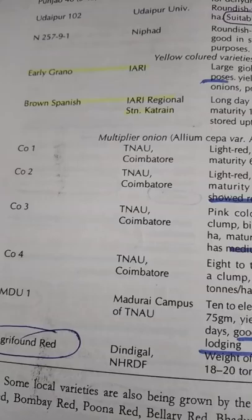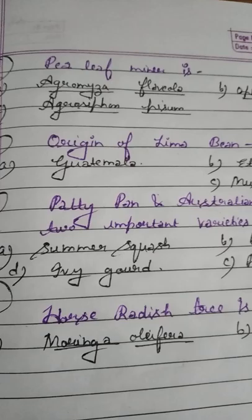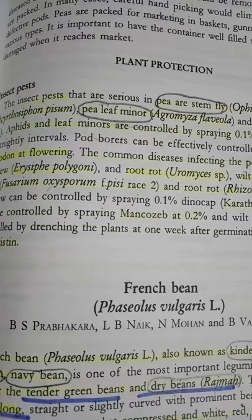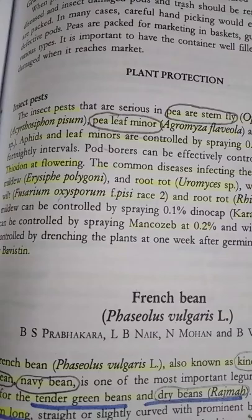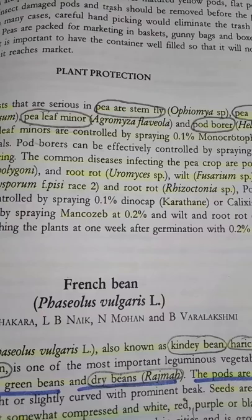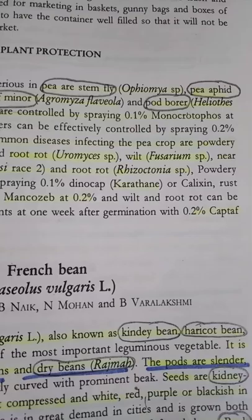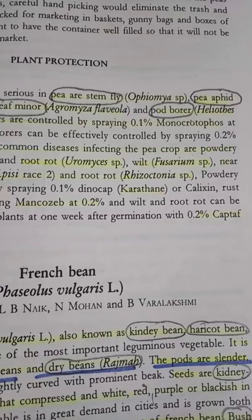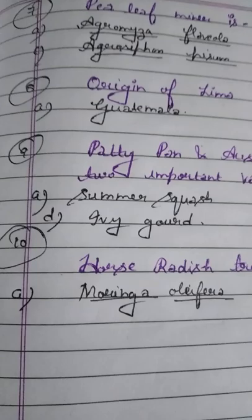Question number 7. Pea leaf miner is: Option A: Agromyza fabiola. Option B: Ophiomia species. Option C: Acyrthosiphon pisum. Remember: pea stem fly is Ophiomia species; pea aphid is Acyrthosiphon pisum; pea leaf miner is Agromyza fabiola; and pod borer is Heliothis (old name) or Helicoverpa. Also remember diseases of pea: powdery mildew caused by Erysiphe polygoni, root rot by Rhizoctonia, and wilt by Fusarium species. Karathane is also called Dinocap or Calixin.